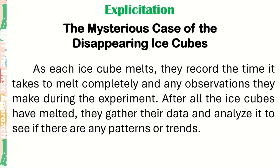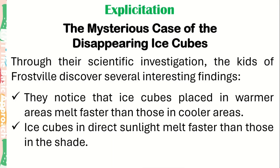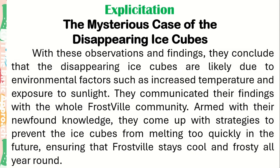After all the ice cubes had melted, they gathered their data and analyzed it to see if there were any patterns or trends. Through their scientific investigation, the kids of Frostville discovered that ice cubes placed in warmer areas melt faster than those in cooler areas, and ice cubes in direct sunlight melt faster than those in the shade. They concluded that the disappearing ice cubes were likely due to environmental factors such as increased temperature and exposure to sunlight, and communicated their findings with the whole Frostville community. Armed with their newfound knowledge, they came up with strategies to prevent the ice cubes from melting too quickly.